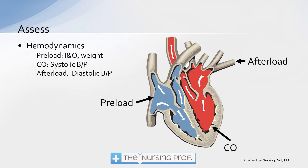Hemodynamically, we can assess a number of different things with our cardiac patient. When we talk about hemodynamics you may think in terms of the ICU — preload, cardiac output, afterload. But you're looking at this all the time when you assess your patients. I&O and weight tell you about the patient's total fluid volume status — their preload. You're looking at cardiac output by assessing their systolic blood pressure, and you're looking at afterload by looking at the diastolic blood pressure. When you start looking at these values in hemodynamic terms, it makes a lot more sense what you're seeing in your cardiac patient.